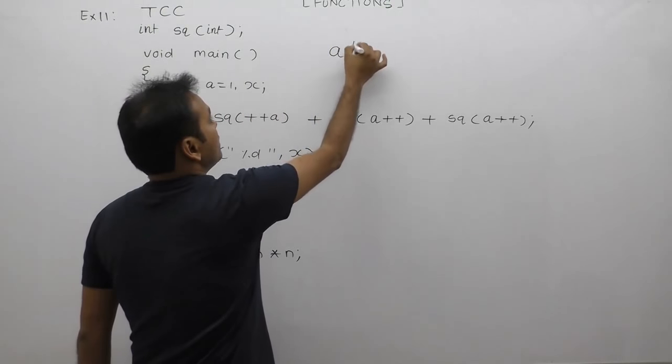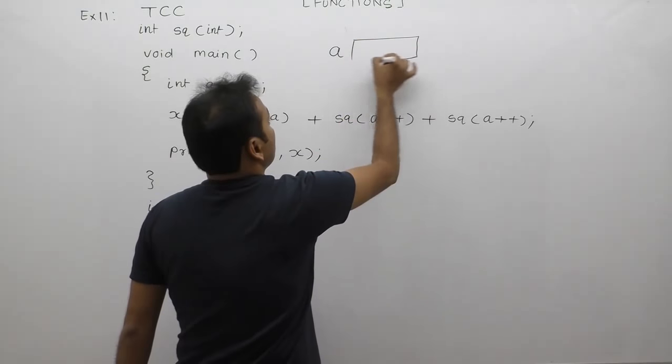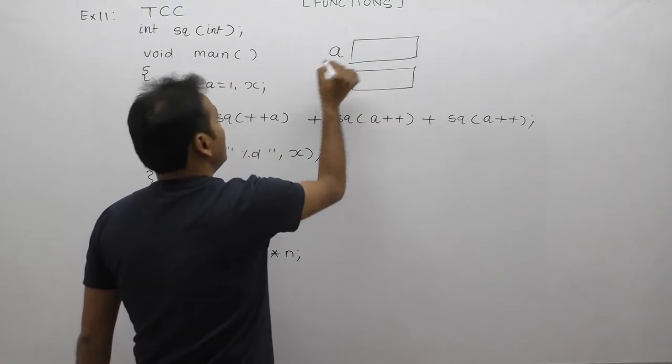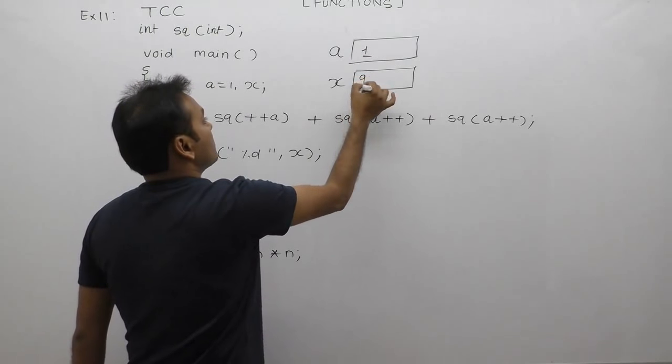Variable a and variable x, with the initial value of a is 1, x is garbage. In this case, we have binary plus operators with the same priority, so we solve left to right.